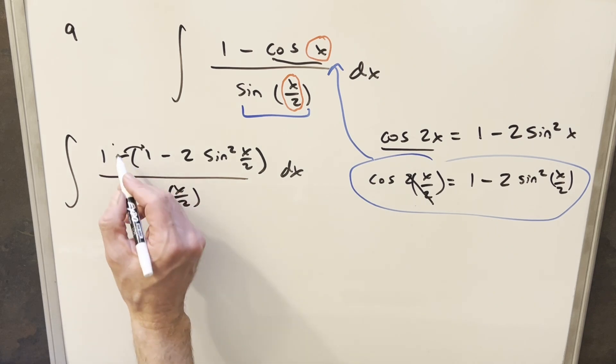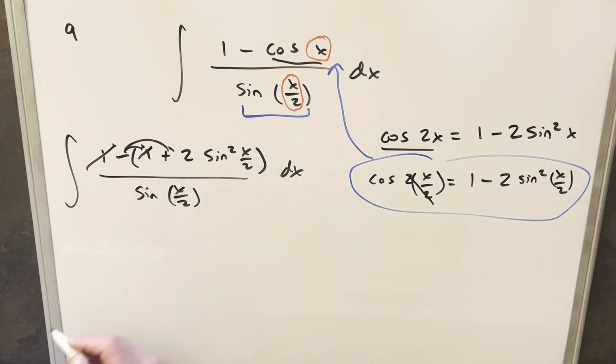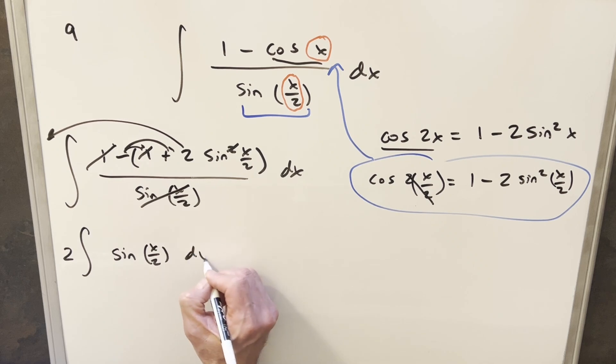Distributing the minus, one minus one is going to go away and be zero. Distributing the minus in here, that's just going to turn this into a plus. So now we have two sine squared x over two over sine x over two. We'll rewrite that and cancel one of these with one of these, bring the two up front of the integral, so we're going to end up here with two sine x over two dx.